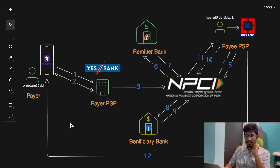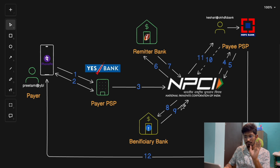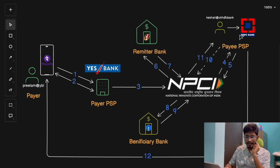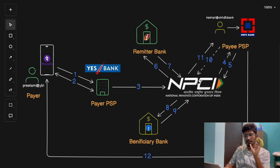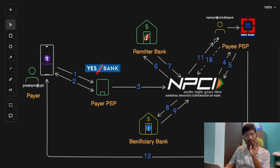In Step 9, the merchant's bank receives the request, credits the amount to the merchant's account, and sends a credit response back to NPCI confirming the credit has been done successfully. In Step 10, the Payee PSP regularly checks with NPCI for the payment status — pinging the NPCI network — to confirm whether the credit to the merchant and the entire transaction has been successfully completed. In Step 11, once both debit and credit are successfully done, NPCI responds with the current transaction status, confirming whether the payment was successful, and sends the response back to the Payee PSP.